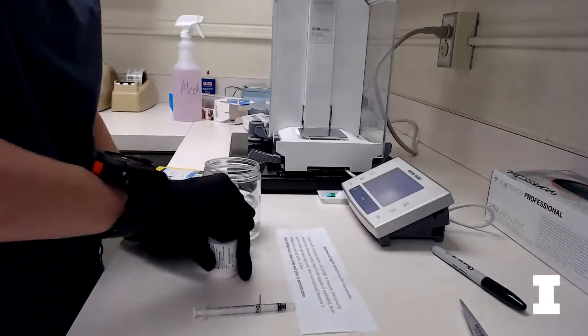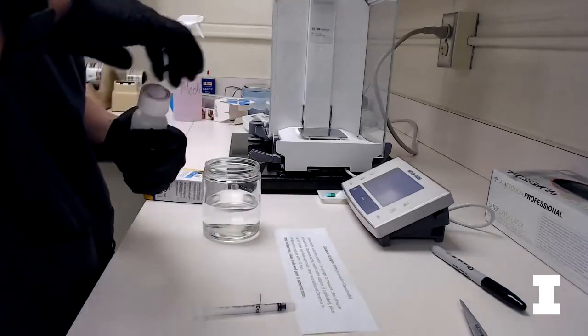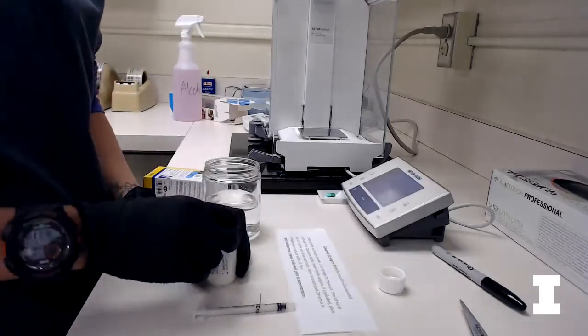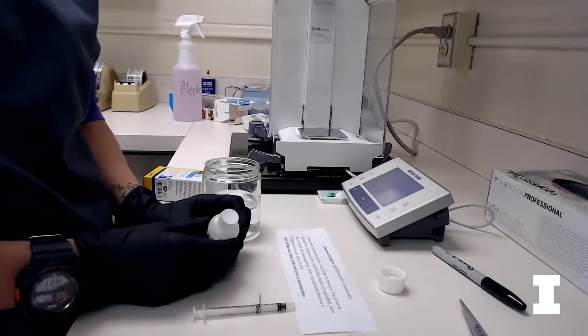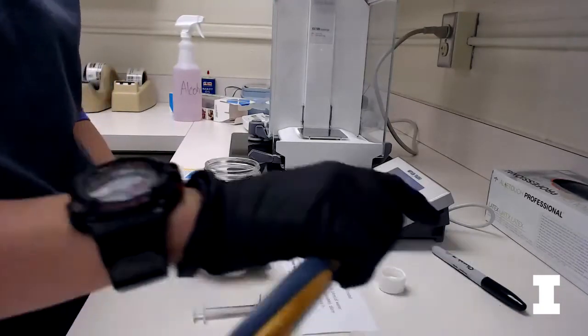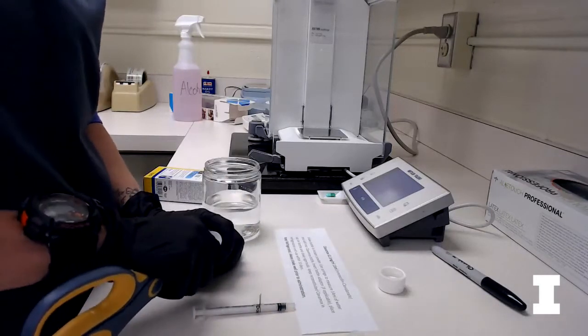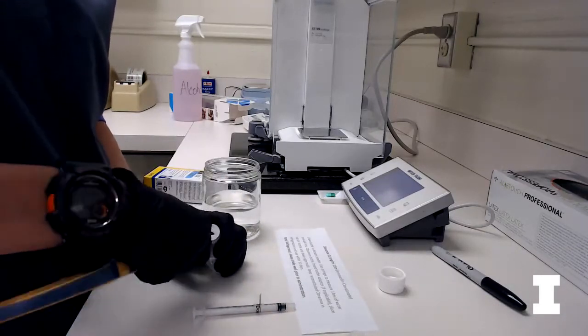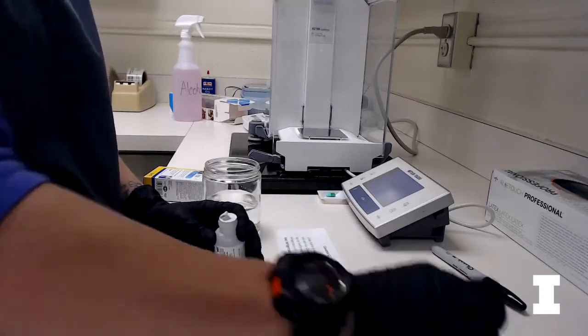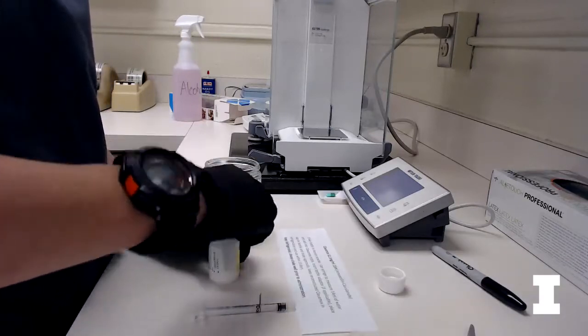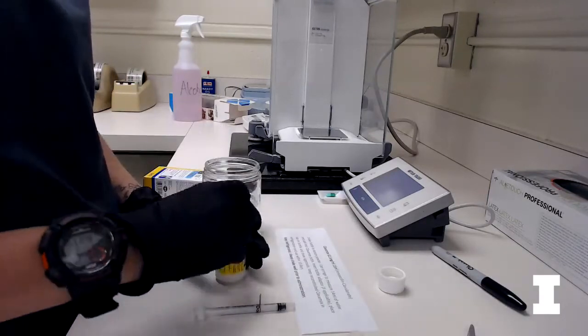Then we're going to open the bottle that contains the drug and there's going to be a safety seal on top of it. These can be pretty challenging to get off sometimes so you can use a scissor to puncture a hole in it and then peel off the safety seal like so.